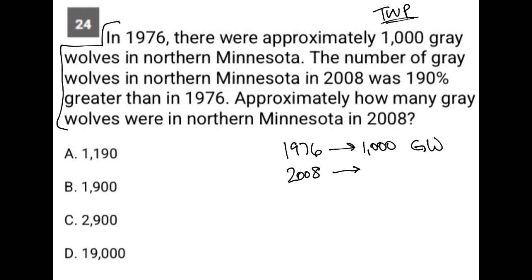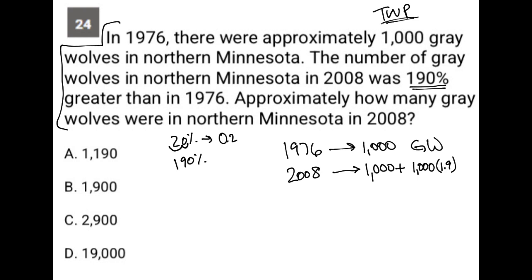Let's figure out what this should be. '190% greater than in 1976' means you had the amount from 1976 and you're adding 190% more to that. A percentage means nothing without its base value, so 190% more means I'm going to take that same 1,000 and multiply it by 1.9. 1.9 is the decimal equivalent of 190% — just like 20% has a decimal equivalent of 0.2, you move the decimal left twice, so 190% becomes 1.9.